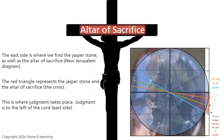The east side is where we find the Jasper Stone, as well as the altar of sacrifice. In the New Jerusalem diagram, the red triangle represents the Jasper Stone and the altar of sacrifice — the cross. This is where judgment takes place. Judgment is to the left of the Lord, the east side.